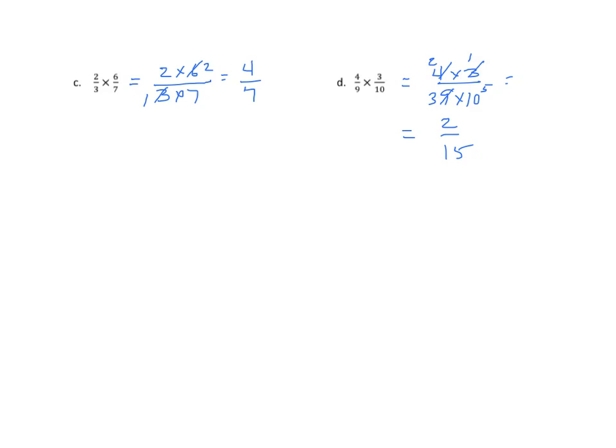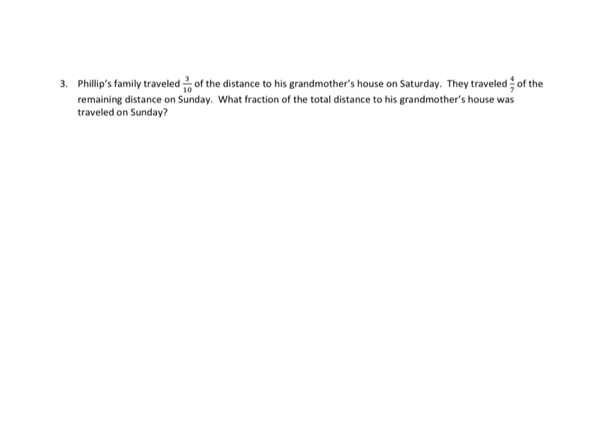Let's get on to some word problems now. The Phillips family traveled three-tenths of the distance to his grandmother's house on Saturday. They traveled four-sevenths of the remaining distance on Sunday. What fraction of the total distance to his grandmother's house was traveled on Sunday? Let's make that tape diagram. We're going to break this into tenths because three-tenths, the denominator is ten. We're going to bracket three-tenths. We'll call that Saturday.